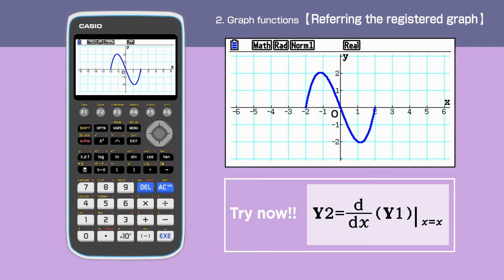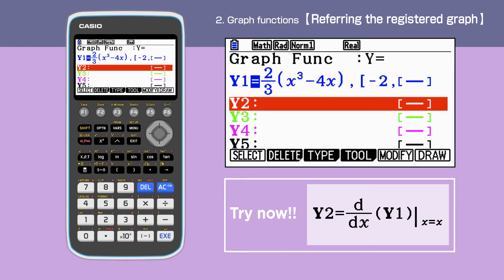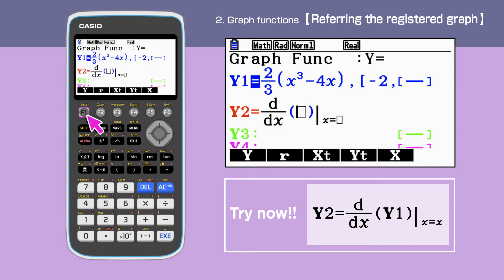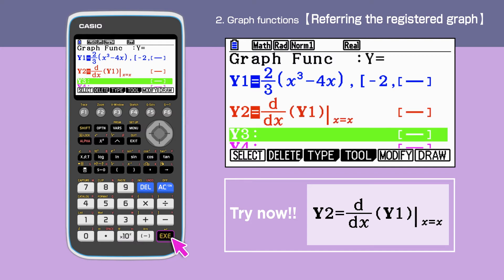Next example, we will draw the derivative function of y1. Press exit to go back to the graph function screen. Display the option command menu by pressing the option key. Then press F2 to open the calculation command. Enter F1 to select d by dx. Then press F1, 1 to choose the function y1. Y1 is the equation we are differentiating here. Press execute to confirm.